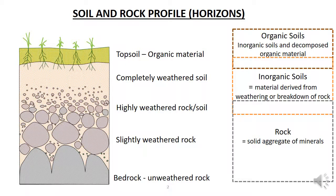Rock is a solid aggregate of minerals which the earth's crust is built of. Rock is exposed to weathering which causes it to break down into soil. There are several different types of weathering. Mechanical weathering is the breakdown of the parent rock by physical processes such as freezing and thawing, erosion and abrasion — basically it just gets broken down.